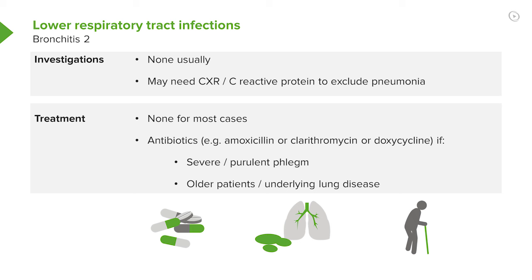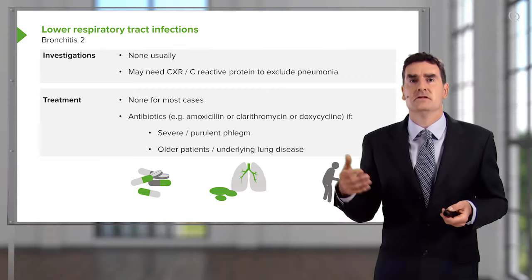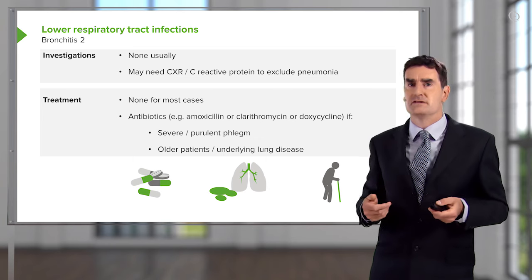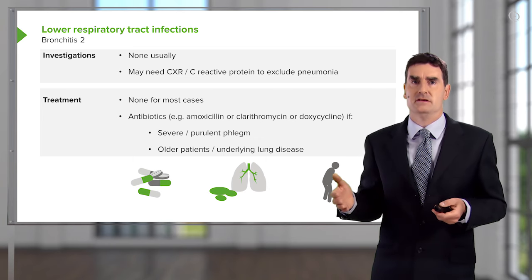Treatment for most people is simply to wait and let them get better. If it's a bacterial infection, you may want to give antibiotics — particularly in patients with purulent phlegm, those who are severely unwell, or older patients where the risk of a bacterial infection progressing to pneumonia is increased. Amoxicillin, clarithromycin, or doxycycline should be adequate.